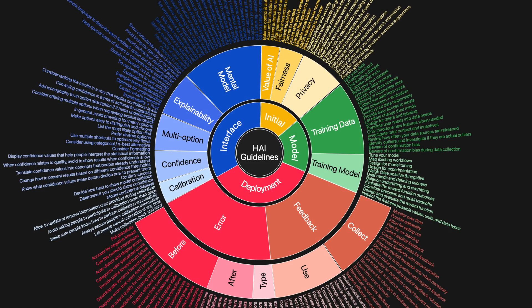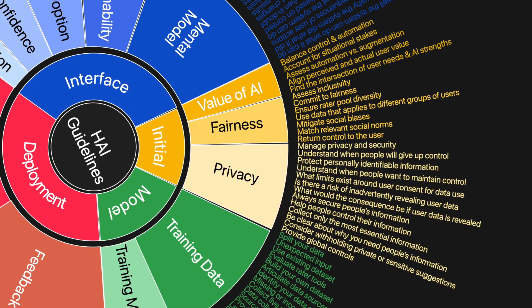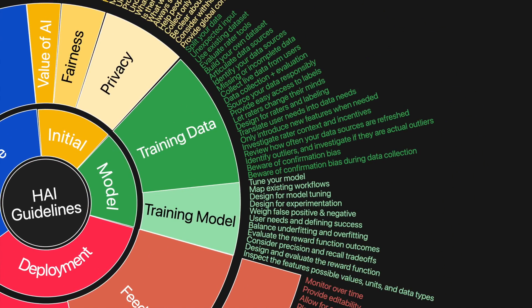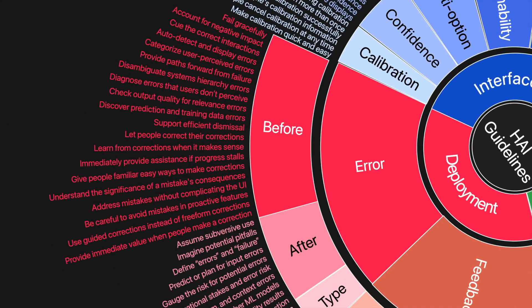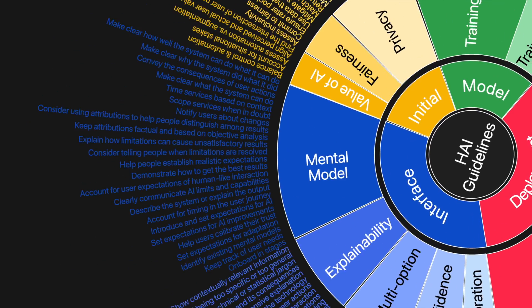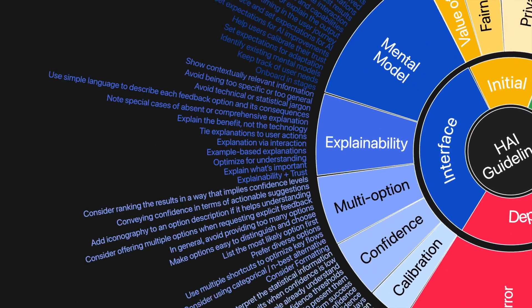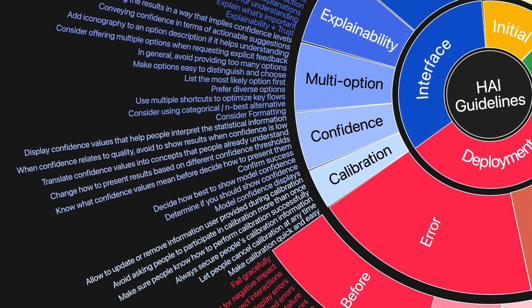Our structure breaks down into four main categories: initial considerations, the model, deployment, and the interface. For initial considerations, there are guidelines on ensuring privacy, fairness, and evaluating the value that AI brings to a given user need. For the model, guidelines concern how you handle training data and the training process itself. For deployment, there are guidelines for collecting feedback and handling errors. And for the interface, there are guidelines for ensuring explainability, mental models of the users, as well as providing multiple options and a good calibration experience.